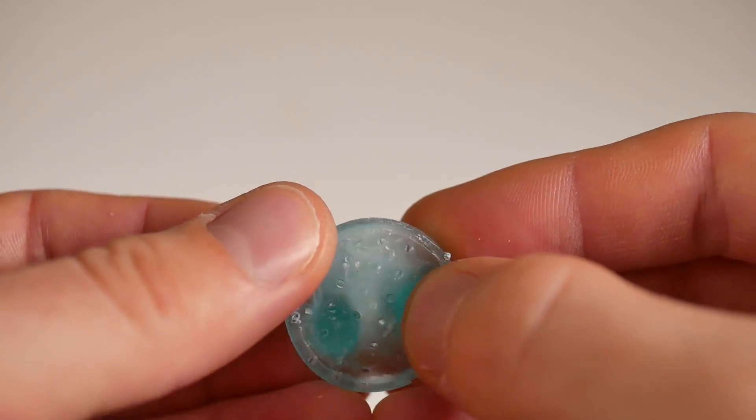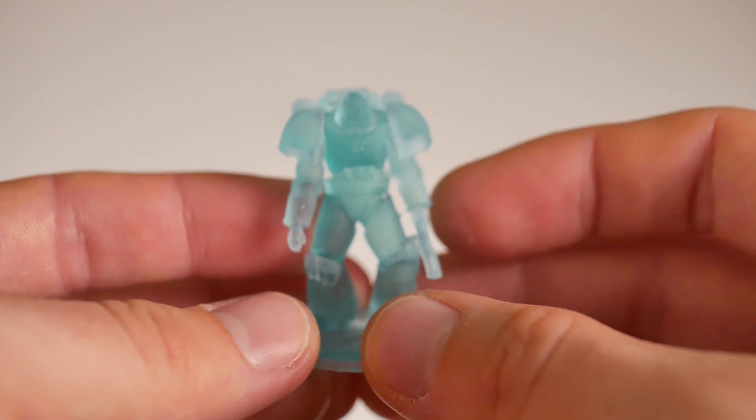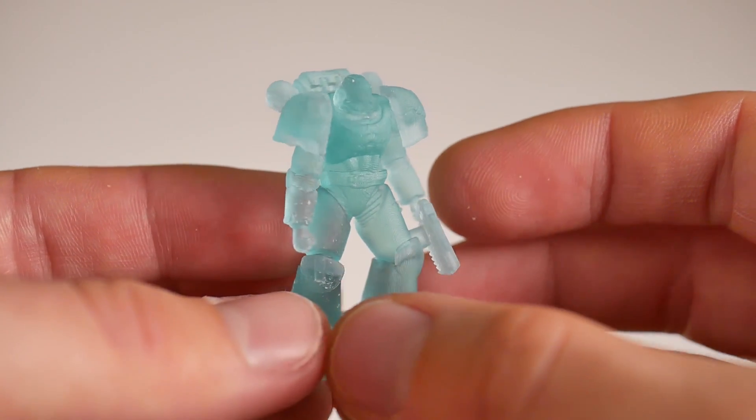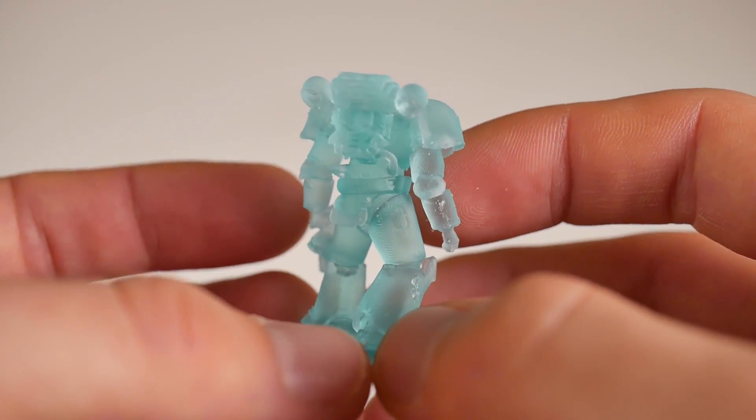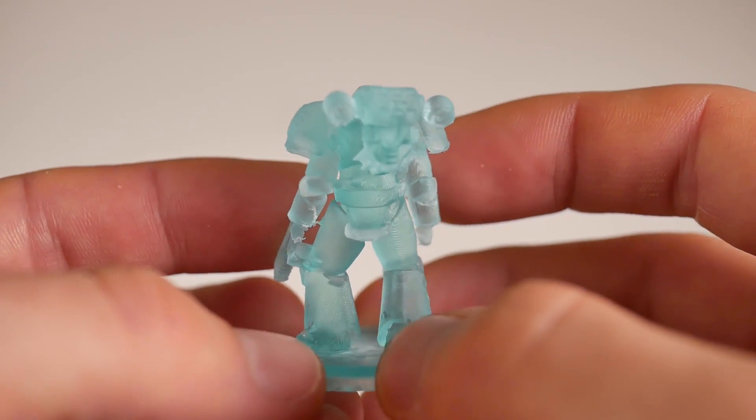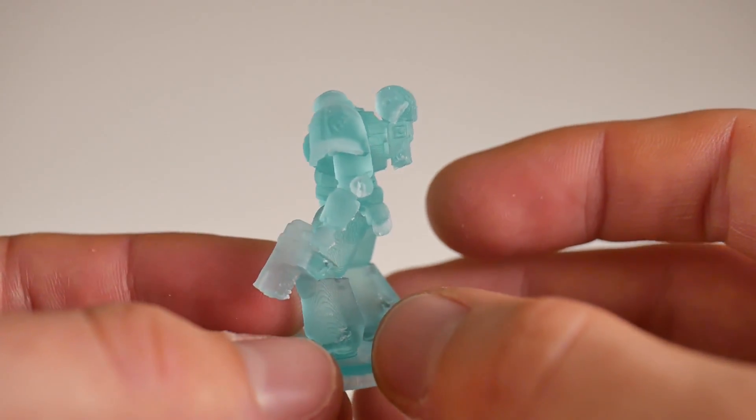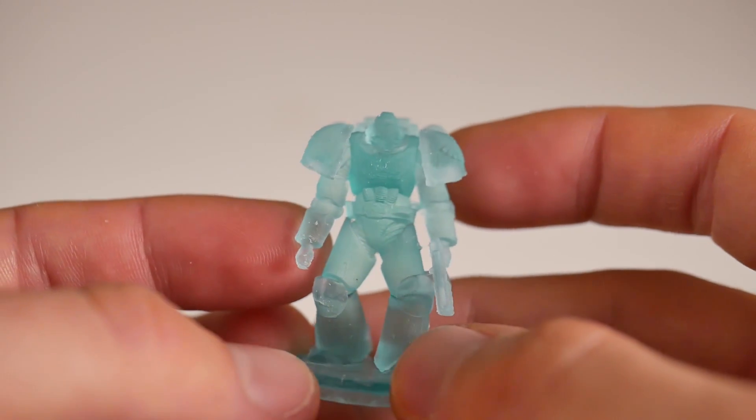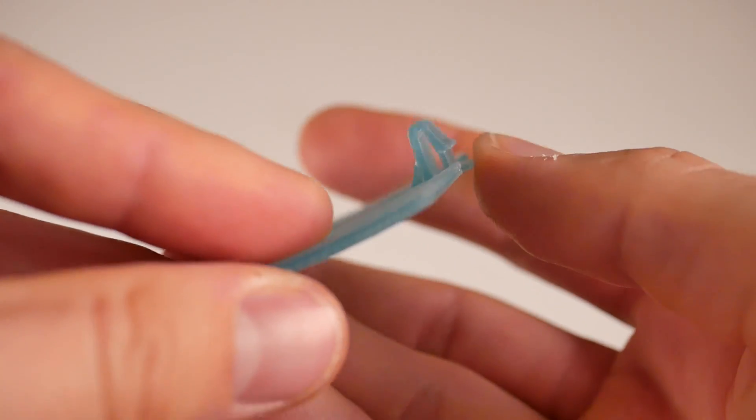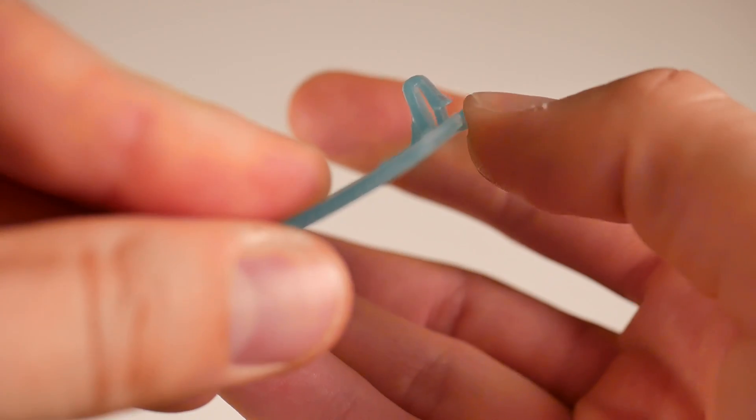I believe that in one of those videos that I had sent you over to, Phil had compared the impact strength of this to PETG. PETG had an impact strength of like 16, well this was at 14 and PLA was at 9. So it's definitely higher strength than PLA and pretty close to that of PETG as far as impact strength goes.